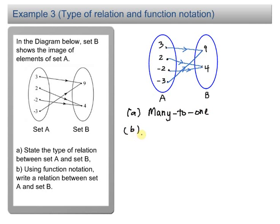For part B, you have to use the function notation to write a relation between set A and set B. Some students find part B here is a bit tricky. Either they do not understand the function notation, or they can't find the relation between set A and set B.